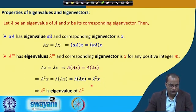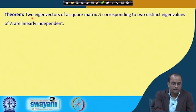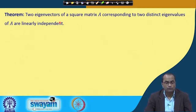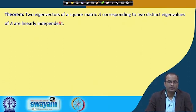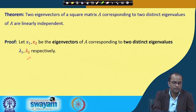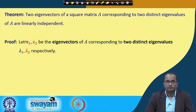The next property: two eigenvectors of a square matrix A corresponding to two distinct eigenvalues are linearly independent. We can prove this for any matrix. Let x1 and x2 be eigenvectors corresponding to two distinct eigenvalues lambda1 and lambda2 respectively, satisfying A x1 equals lambda1 x1 and A x2 equals lambda2 x2.